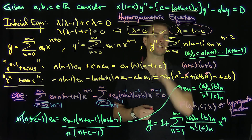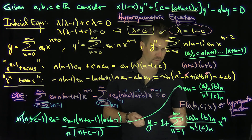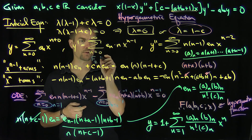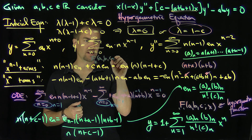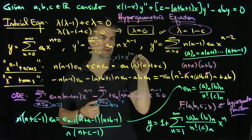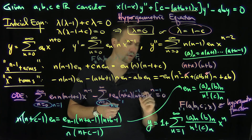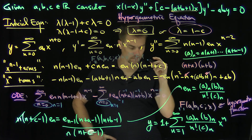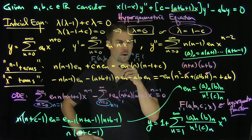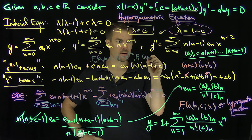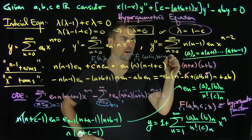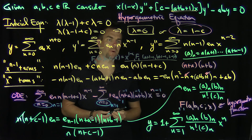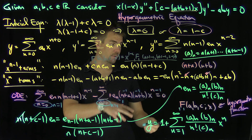Now, what happens with the second solution corresponding to lambda equals 1 minus c? Using the same scheme, the second hypergeometric function is F_2(a, b; c; x) equals x^(1-c) times F_1(a+1-c, b+1-c; 2-c; x). You can verify this solution by plugging it back in using the same method.